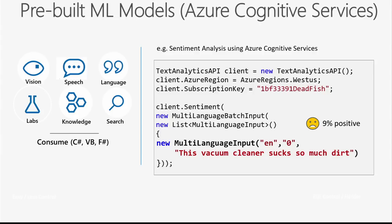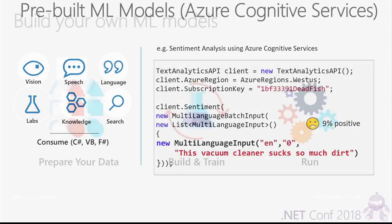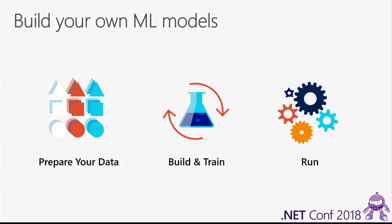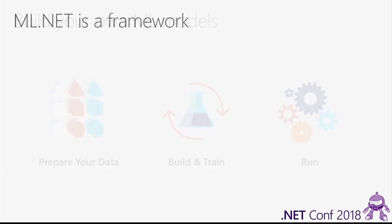Pre-trained ML works well for a good number of scenarios, but in many others you need to build custom ML models where you bring in your own data, train with your data, use your own algorithms, and deploy those models in production. That's really what ML.NET is about — a framework for building your own custom ML models.